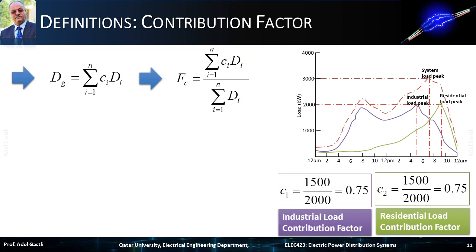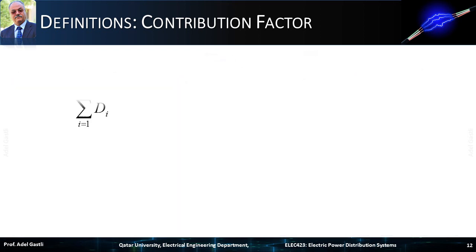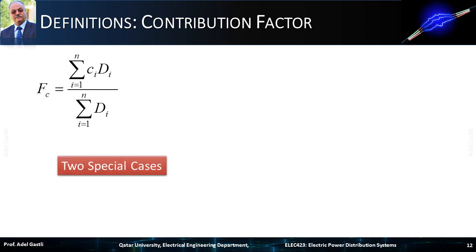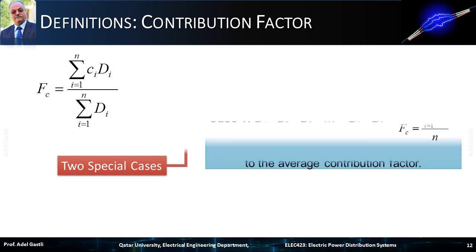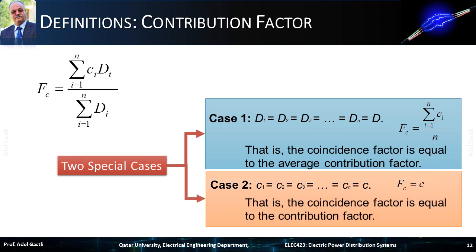Considering the previous example, the coincidence factor can be calculated based on this equation, and we obtain the same value calculated previously using the diversity factor equation. Using the coincidence factor as a function of class contribution factors, two special cases can be considered. In case 1, if all demands are equal, the coincidence factor equals the average contribution factor. In case 2, if all contribution factors are equal, the coincidence factor equals the contribution factor.